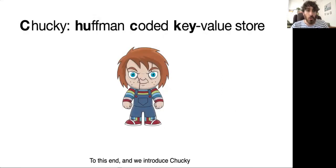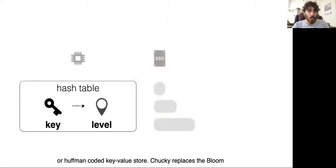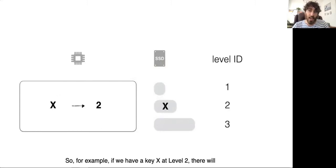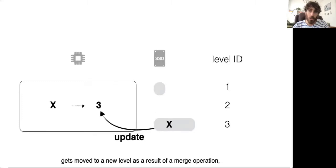To this end, we introduce Chucky, or Huffman-coded key-value store. Chucky replaces the Bloom filters by a hash table that maps from every key in the system to the level where the corresponding entry resides. For example, if we have a key x at level two, there'll be a matching entry in the hash table. Whenever an entry gets moved to a new level as a result of a merge operation, we also update its corresponding location in the hash table.